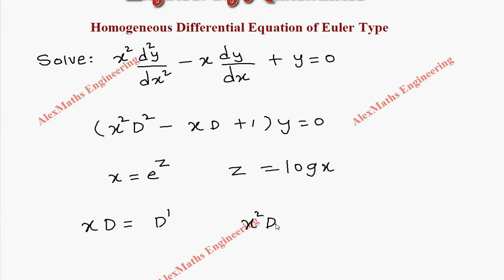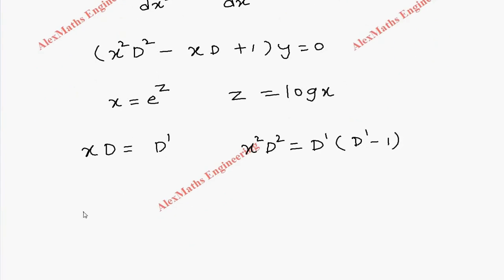And x²D² is nothing but D'(D' - 1). Let's substitute here: for x²D² it is D'(D' - 1), minus xD is D', then plus 1, the whole thing times y equals 0.